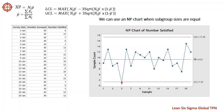Suppose the manager at the driver's license facility decides to save time by only surveying 40 customers each day. When subgroup sizes are equal, we can create an np chart of the data. An np chart plots the number of satisfied customers in each sample, whereas the p chart plotted the proportion. Note the point that falls outside of the control limit — this process is out of control, and the manager should investigate why customer satisfaction was so low on that particular day.